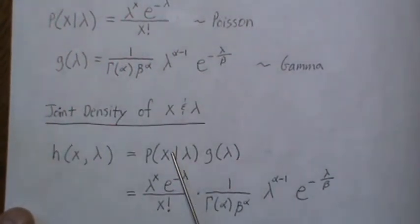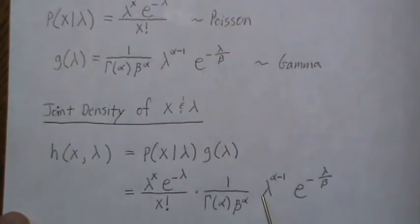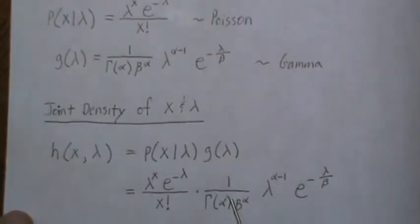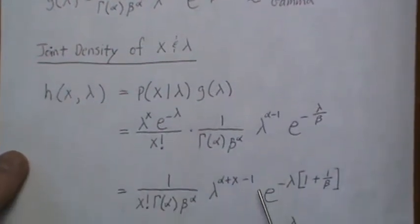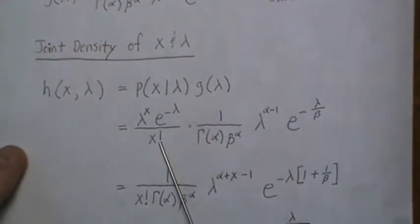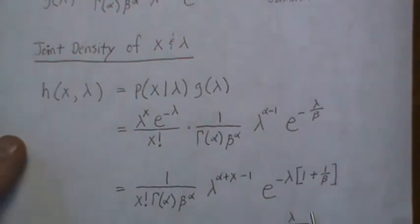And then we know what each of these pieces are - this is the Poisson and this is the Gamma. Then what I want to do is group the lambdas together and then the non-lambdas. So the X factorial and the gamma of alpha, those don't have anything to do with the lambda, and then these pieces will be combined with these pieces.